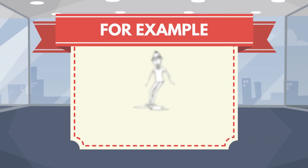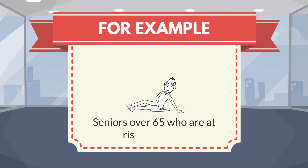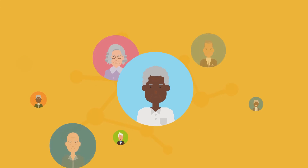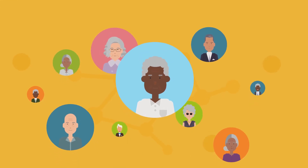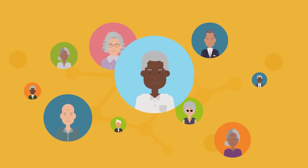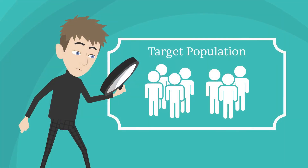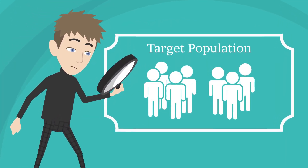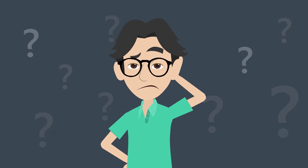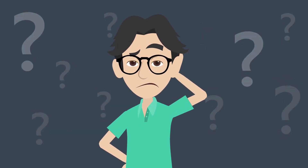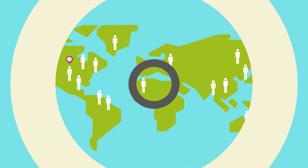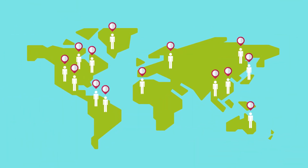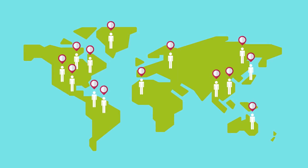For example, let us say we are studying seniors over 65 who are at risk of falling. There are millions of seniors over 65 in the world who are at risk of falling. Your target population is this entire group that you want to draw conclusions about. But clearly, it would not be feasible to collect data from them all. It would be extremely hard to recruit every senior over 65 years in the world who is at risk of falling.